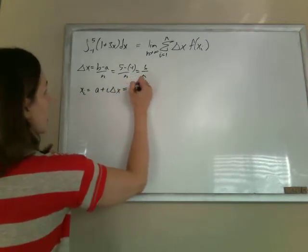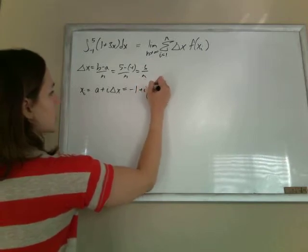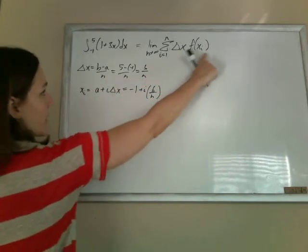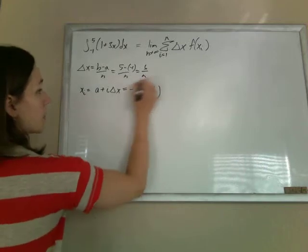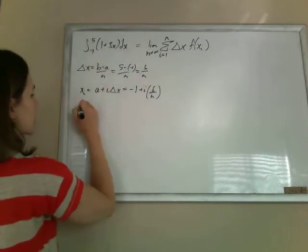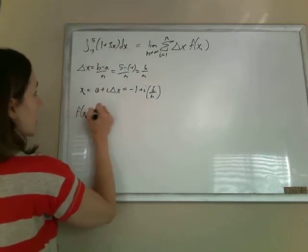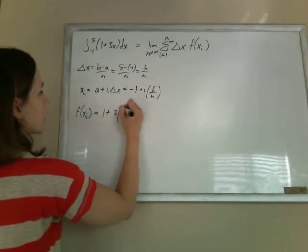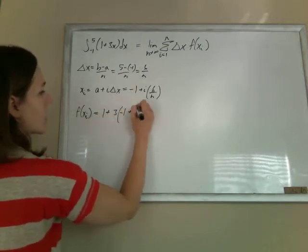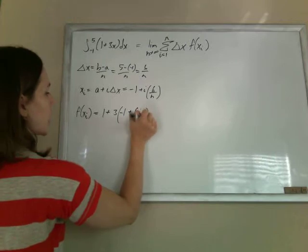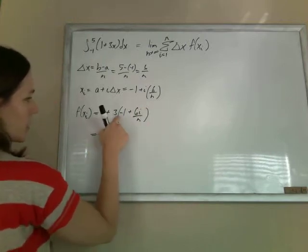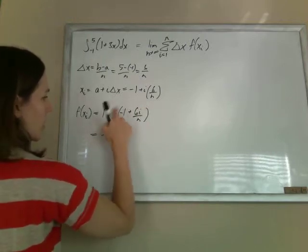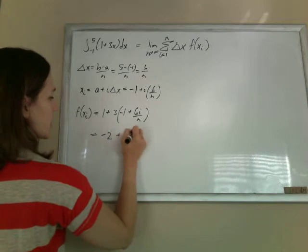So a is negative 1 plus i times 6 over n. Now I'm going to find my f of x_i by plugging in my x of i into my function. So f of x of i is 1 plus 3 times negative 1 plus 6i over n. Clean this up. 1 minus 3 is minus 2, distributing the 3 plus 18i over n.